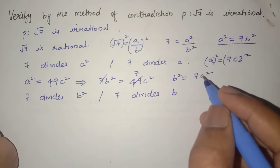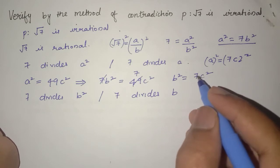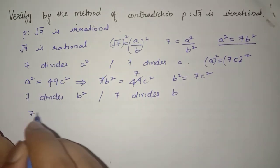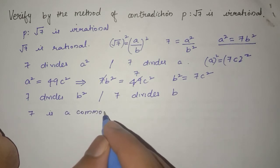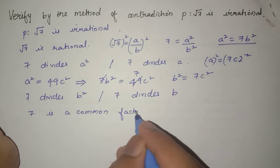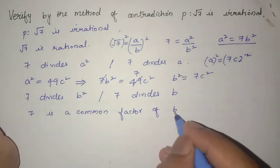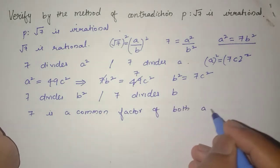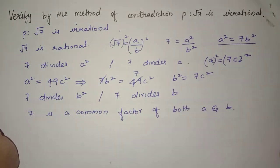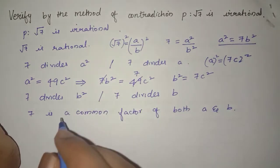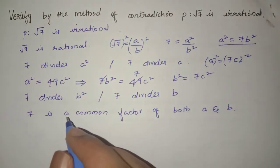Thus 7 is a common factor of both A and B. This contradicts the fact that A and B have no common factor.